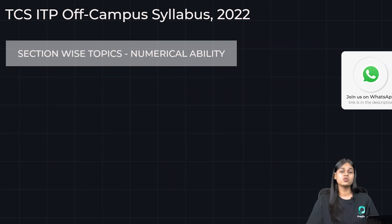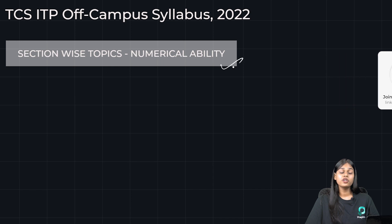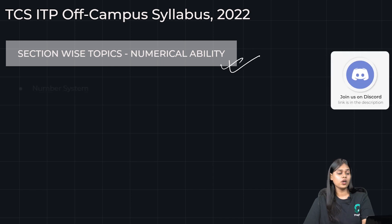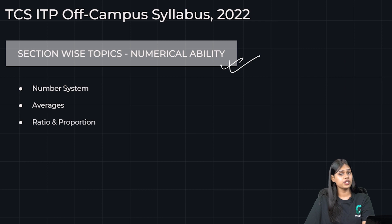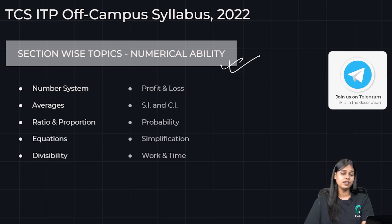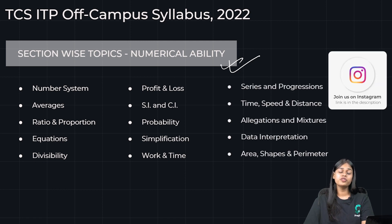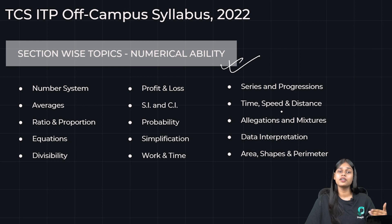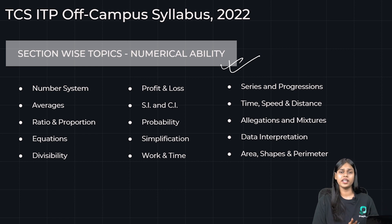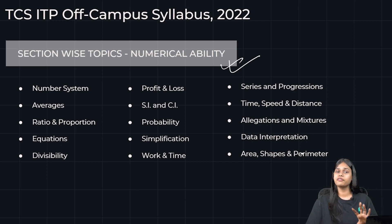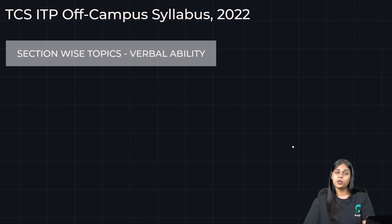For the section-wise topic divisions in the Foundation Round, Numerical Ability covers: number system, averages, ratio and proportion, equations, divisibility, profit and loss, SI/CI, probability, simplification, work and time, and all remaining topics shown on screen. You can take a screenshot or visit prepinsta.com and go to the TCS ITP dashboard to get the full details.